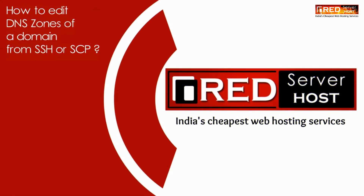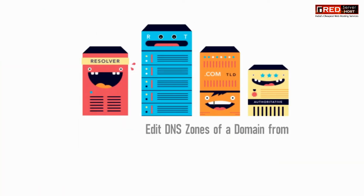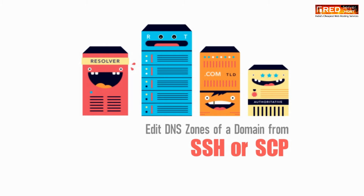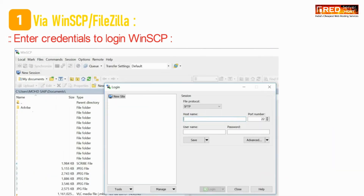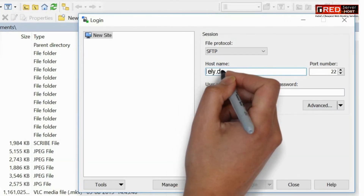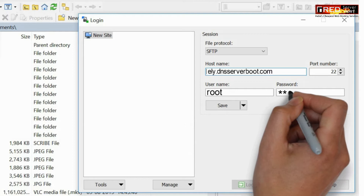Today in this video we will learn about how to edit DNS zones of a domain from SSH or SCP. The first method is to edit it via WinSCP. Enter the credentials of SFTP at root level and then login to your server.